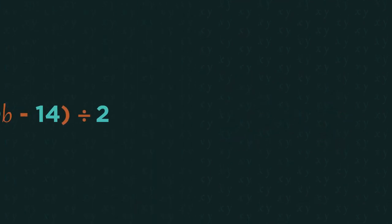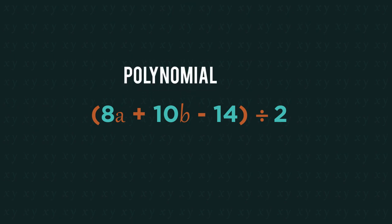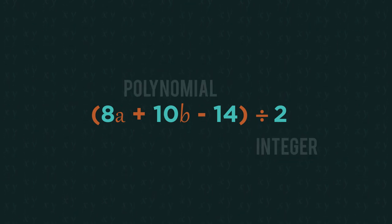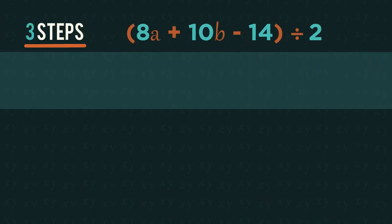So let's jump straight in with an example starting with dividing a polynomial by a number or integer. There are three simple steps to follow.